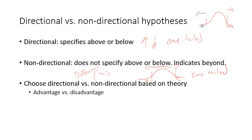How do we choose directional versus non-directional? We do this based on our theory — we should always choose whether we're doing a directional or non-directional test based on theory and our hypotheses. In actuality, you should always choose directional if you can, because the benefit to choosing directional is that you're more likely to find a significant result. But you can only use directional if your hypothesis is based on that. So for Detroit Mercy's average age, we have to have a reason to hypothesize that students are younger than average.